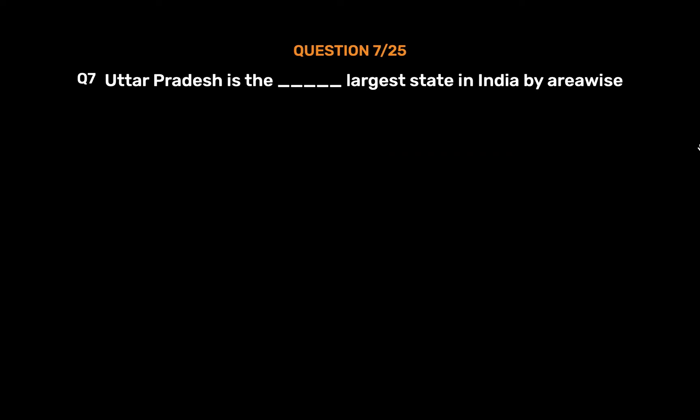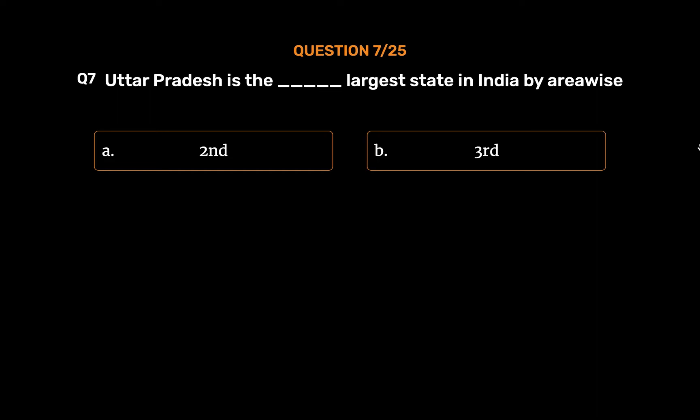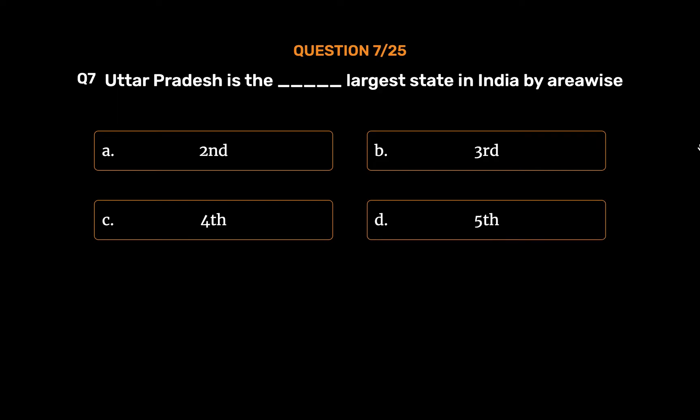Question No. 7: Uttar Pradesh is the blank largest state in India by area. Option A: Second. Option B: Third. Option C: Fourth. Option D: Fifth. The correct answer is Option C: Fourth.